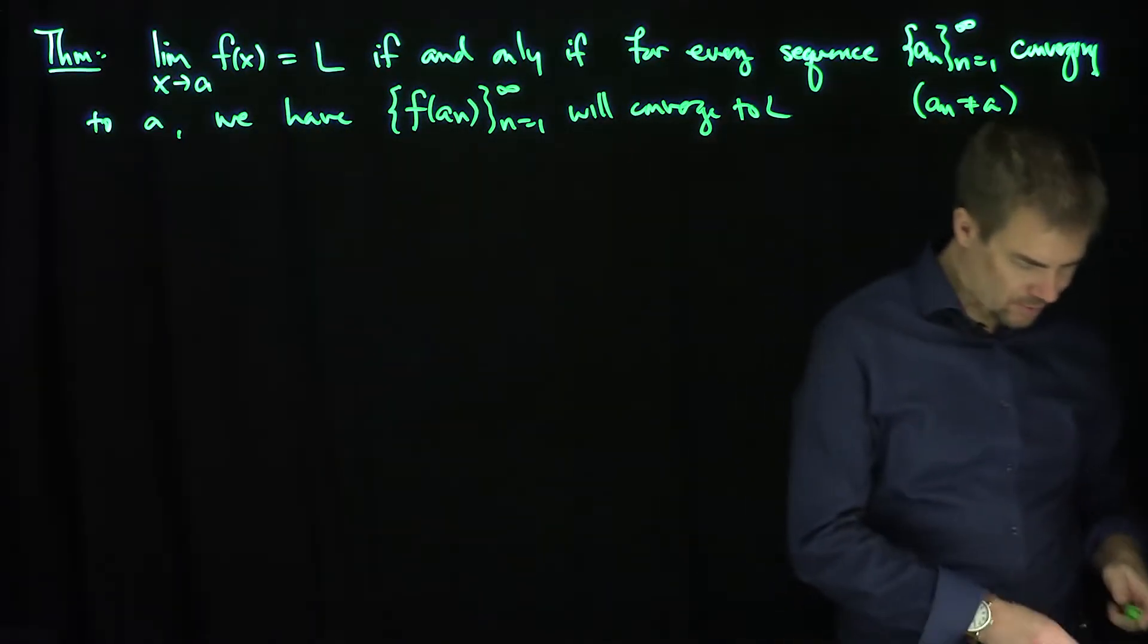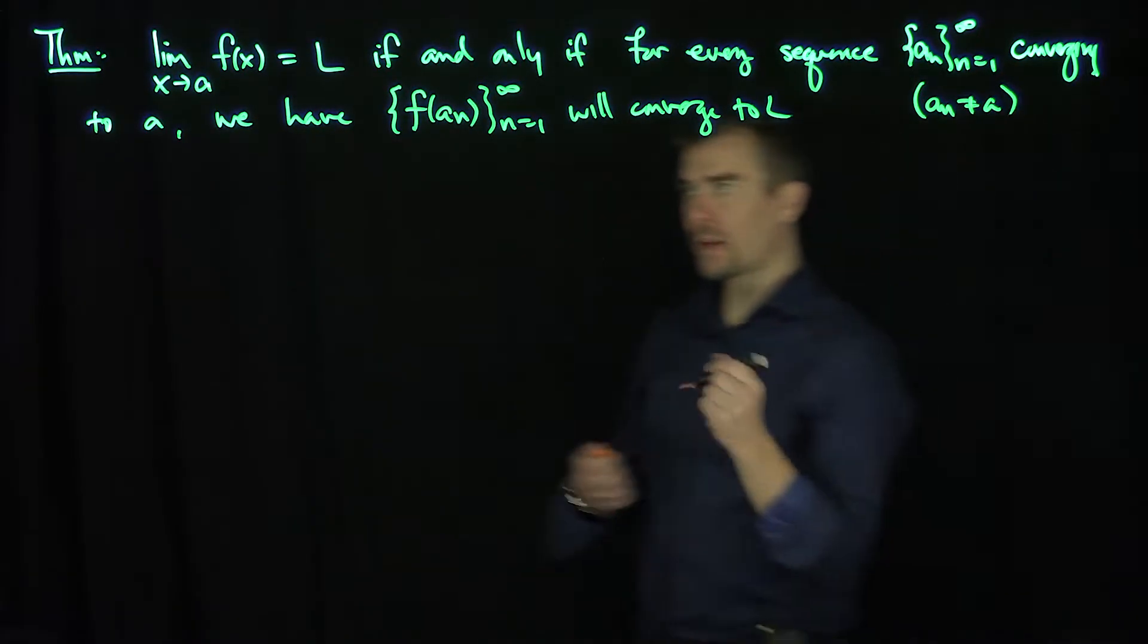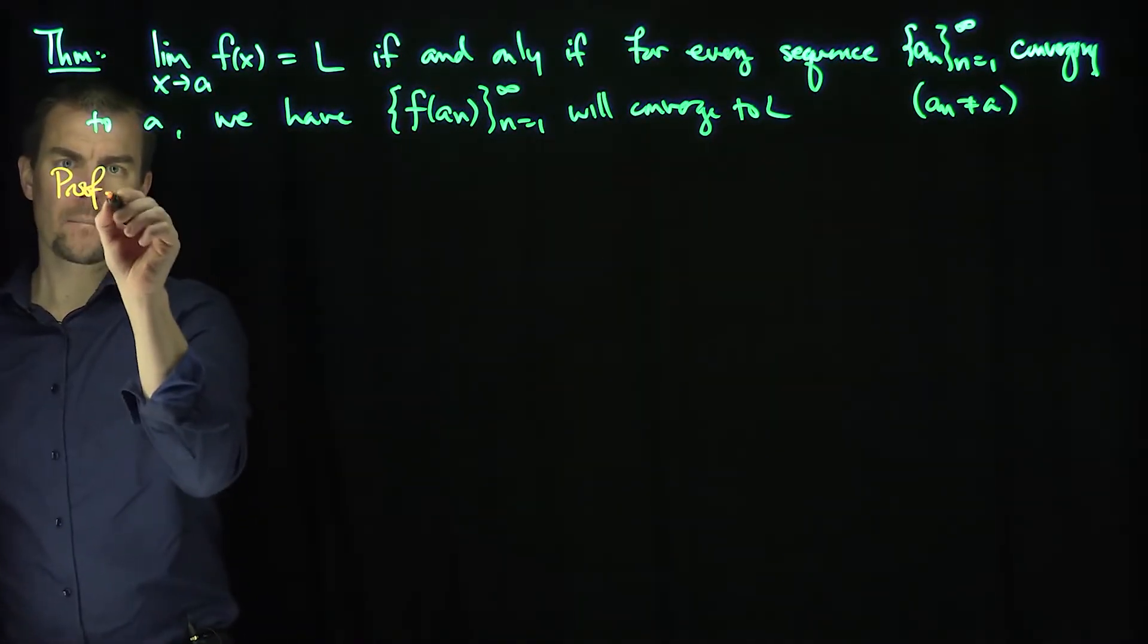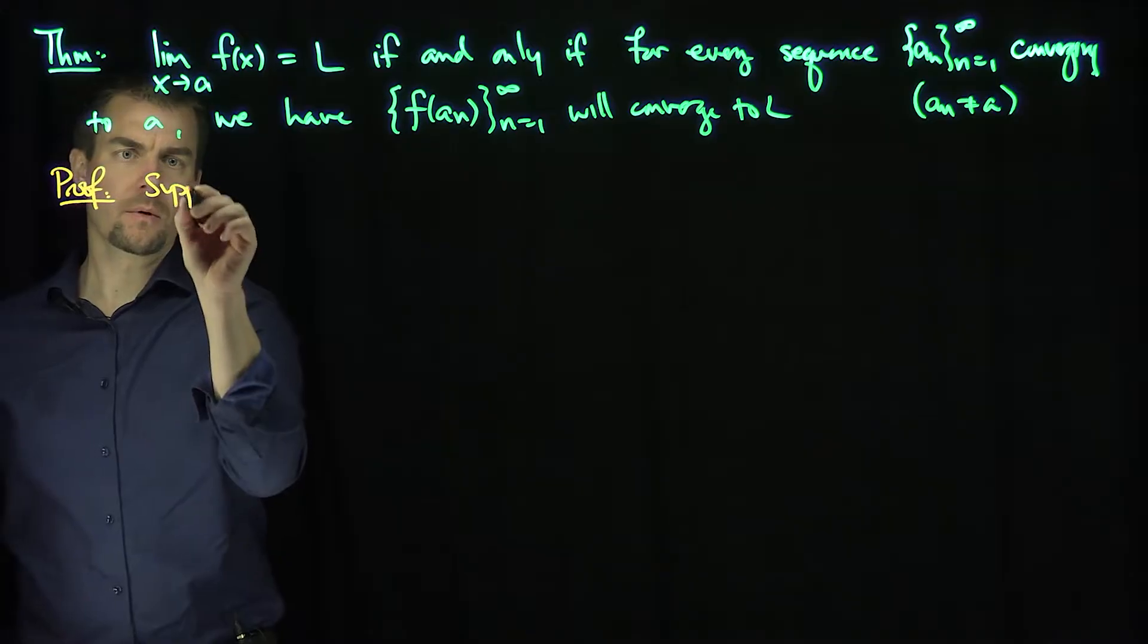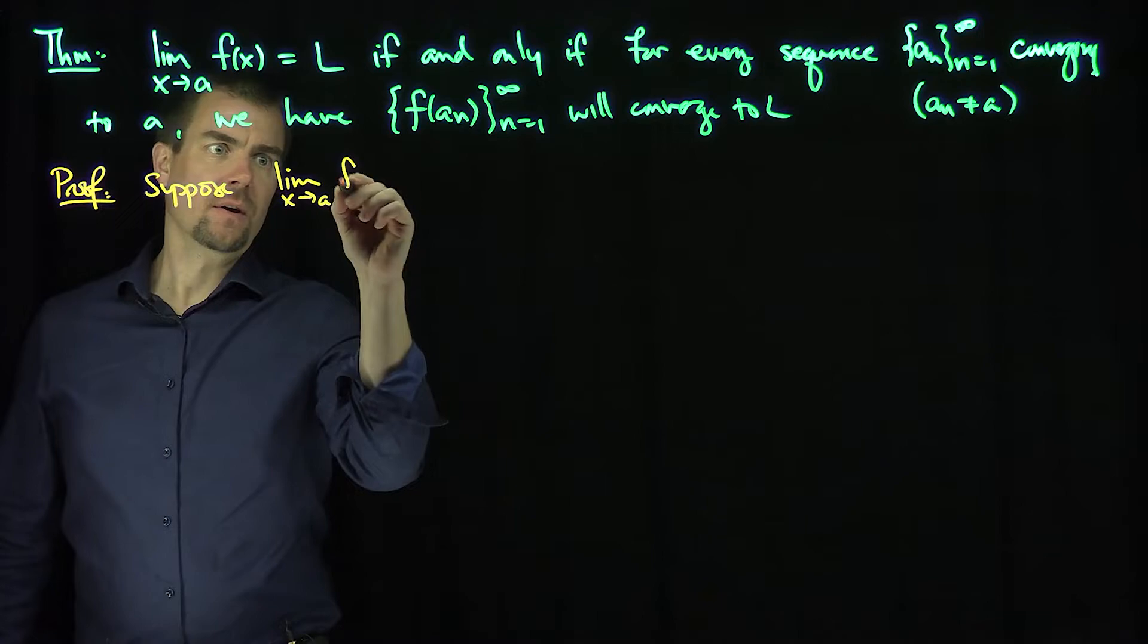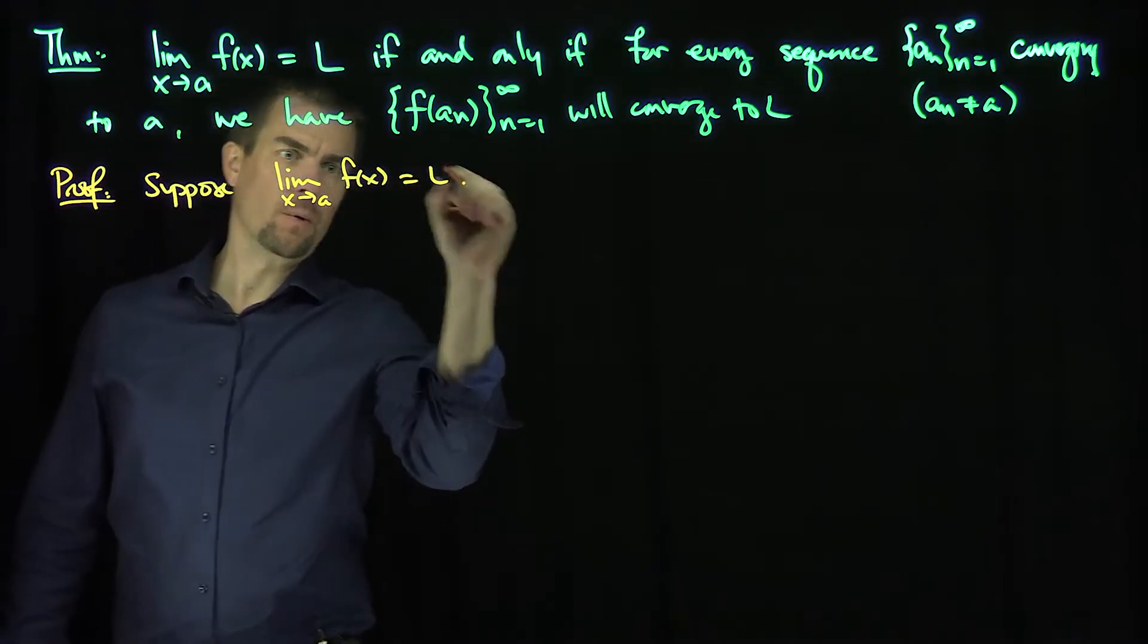So let's prove this theorem. The proof is in two parts. The first part, let's suppose that the limit as x approaches a of f(x) is equal to L.